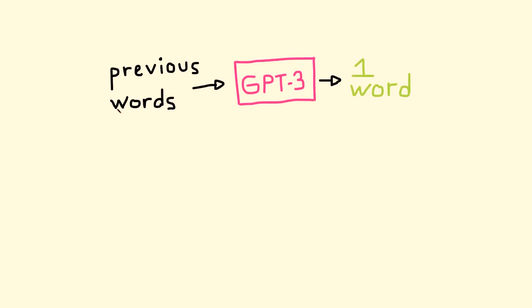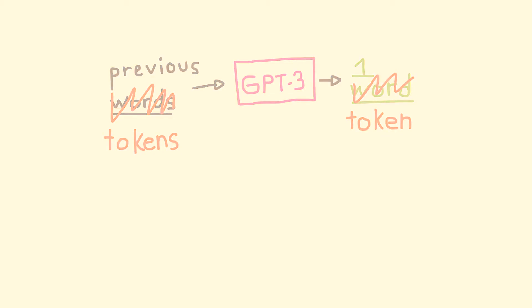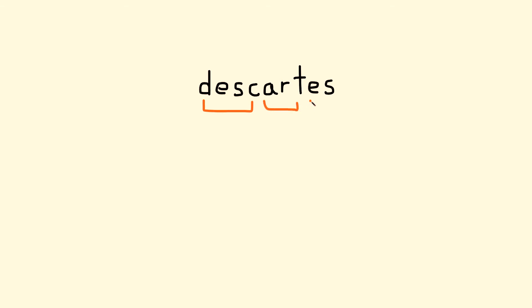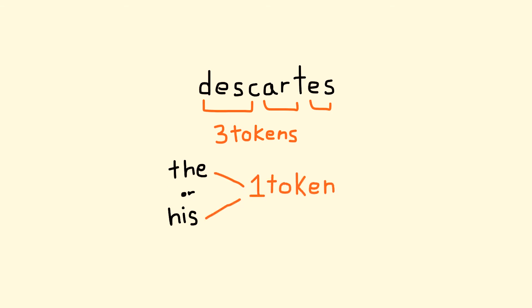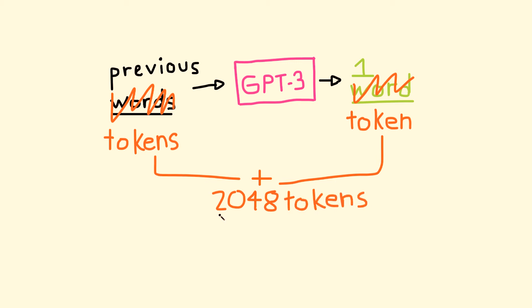Now let's cover some of GPT-3's limitations. Throughout this video I've been saying GPT-3 takes input and output measured in terms of words, but that's not actually true — it's measured in terms of tokens. A token is a fragment of a word, roughly four characters. There can be multiple tokens per word. For example, the word 'Descartes' would be split into three tokens: 'des,' 'cart,' and 'es.' More common words like 'the' or 'his' are stored as a single token, so common words are more efficiently stored. GPT-3 can take a combined input and output of 2048 tokens, which is about 1500 words depending on the content.